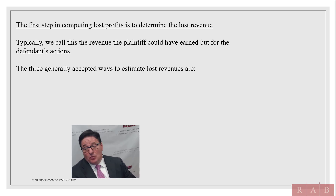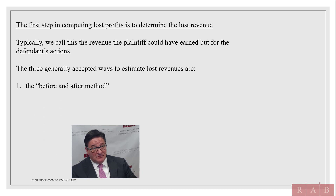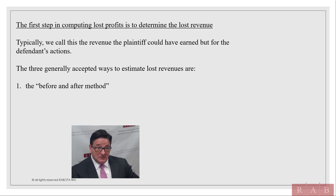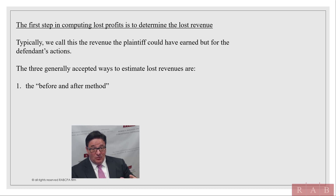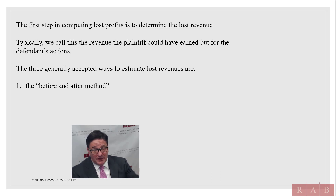There are three basic ways to calculate these damages. One is the before-and-after method — the year before the furniture case, they had sales of a certain amount and sales were increasing in prior years. All of a sudden they fell off a cliff. We compared sales before the state took the sign down and removed the access ramp versus after. We also had the sign expert to back it up. And because there was a recession, we were able to go into other stores, see what their sales decrease was, and compare it to isolate the sales lost specifically because of losing the sign and the access ramp.